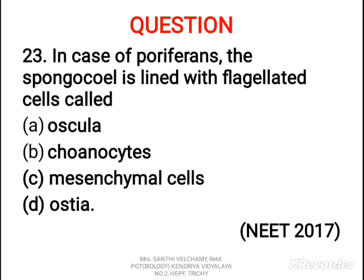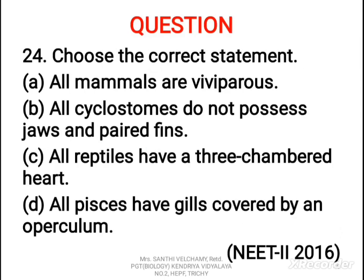23rd question: in the case of Porifera, the spongocoel is lined with flagellated cells called A) Oscula, B) Choanocytes, C) Mesenchymal cells, D) Ostia. The correct answer is B. The spongocoel — that is the central body cavity of sponges — is lined by highly specialized flagellated cells called choanocytes.